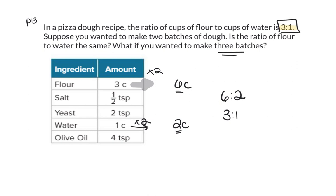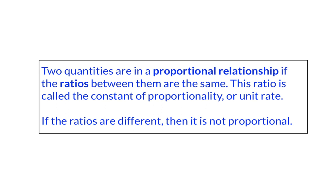The same thing would happen if we wanted to make three batches. And that's because this is a proportional relationship. We know if two quantities are in a proportional relationship because the ratios between them are going to be the same, just like in the pizza dough. This ratio is called, this is an important word here, the constant of proportionality, which we sometimes also just refer to as our unit rate.